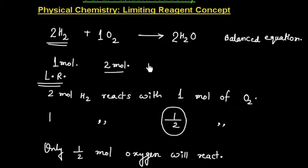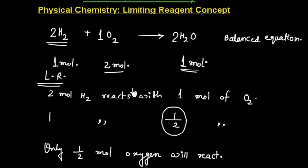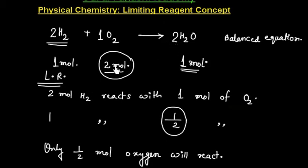How many moles of product will be formed? From the equation, 2 moles of hydrogen gives 2 moles of water. So 1 mole of hydrogen, since all the hydrogen has been used, will give 1 mole of water. The product formed in this case is 1 mole. Importantly, can we use the moles of oxygen to find the product? We cannot. 1 mole of oxygen gives 2 moles of H₂O, so 2 moles of oxygen would give 4 moles of H₂O — but that would be wrong.